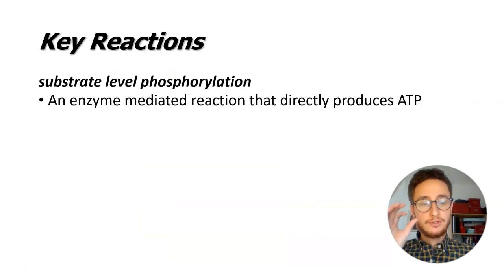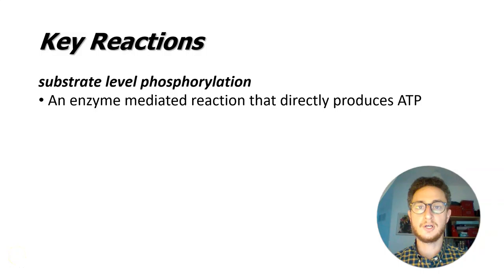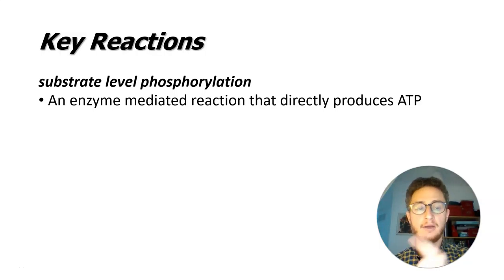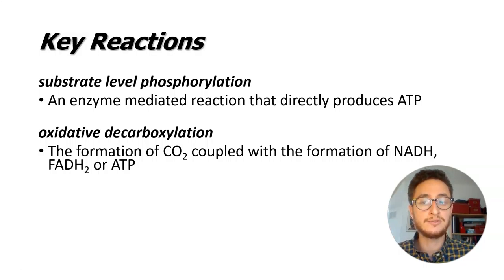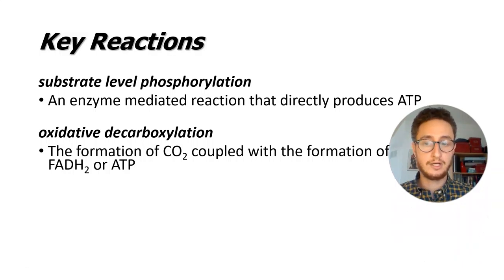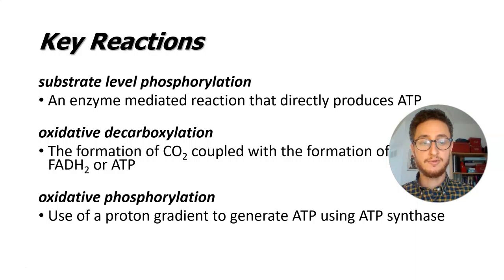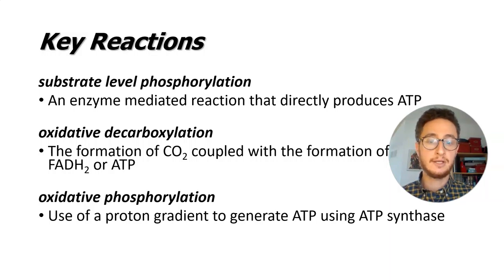These are really important vocabulary words. Substrate-level phosphorylation is when ATP is made directly by an enzyme rather than relying on the ATP synthase turbine. Oxidative decarboxylation means getting CO₂ out and coupling that with a redox reaction where we trap the released energy as high-energy electrons. Oxidative phosphorylation is the term describing the chemical reactions taking place in the electron transport chain.